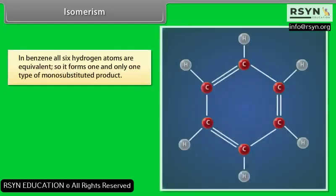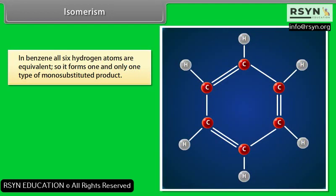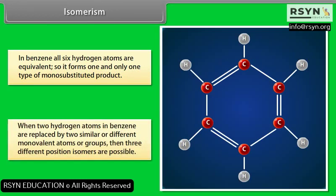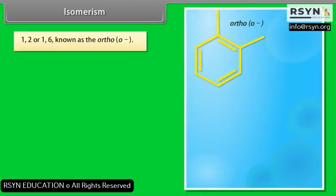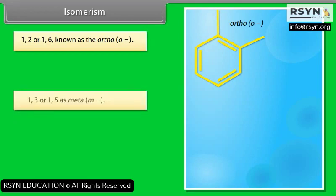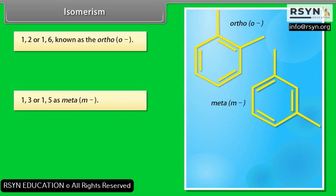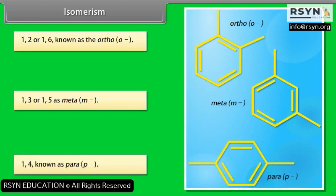Isomerism. In benzene, all six hydrogen atoms are equivalent, so it forms one and only one type of mono-substituted product. When two hydrogen atoms in benzene are replaced by two similar or different monovalent atoms or groups, three different position isomers are possible: first, 1,2 or 1,6 — known as ortho; second, 1,3 or 1,5 — known as meta; and third, 1,4 — known as para. These are called disubstituted compounds.